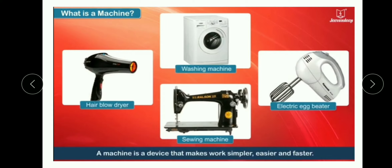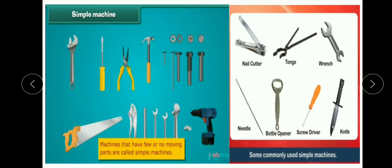First we will know about what is a machine. A machine is a device that makes work simpler, easier and faster, and we call it simple machines. Like nail cutter, tong, wrench, needle, bottle opener, screwdriver, knife — these are simple machines.